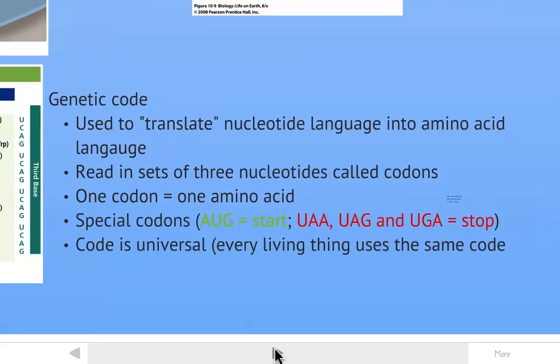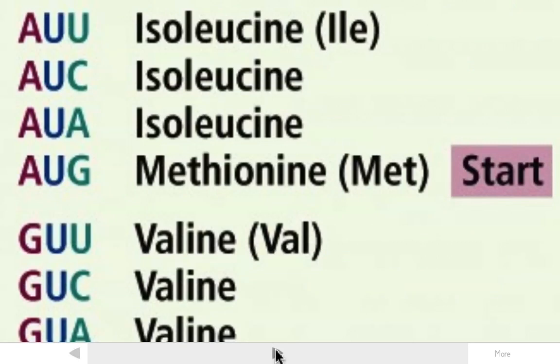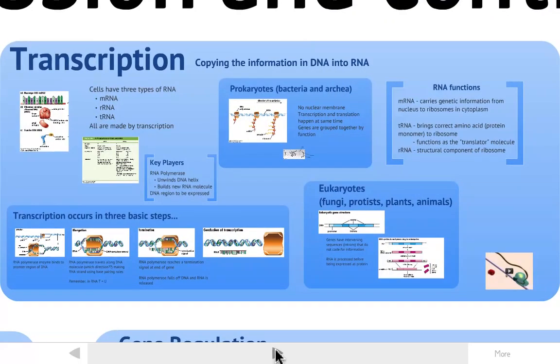And this looks very complex and very confusing. You will not need to know that. What I do want you to focus on is some of the overall aspects of the code, the fact that it's three nucleotides, and that's called a codon. Each codon specifies a specific amino acid. There are some special codons, the start codon AUG and the three stop codons. The reason I highlighted that is because that is the only one you need to remember. AUG is always the start codon. Every single protein starts with AUG.